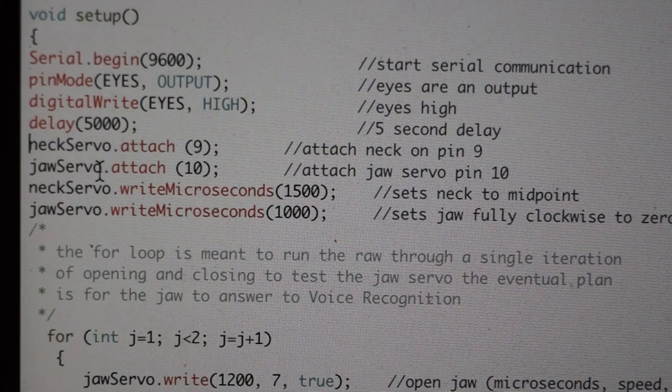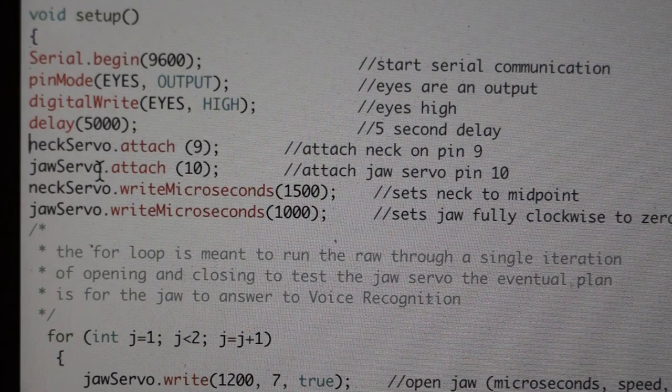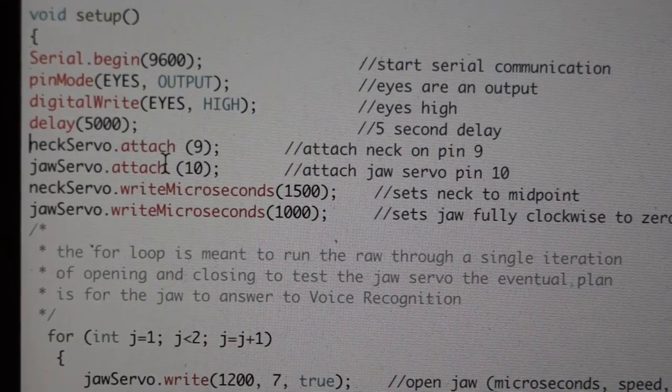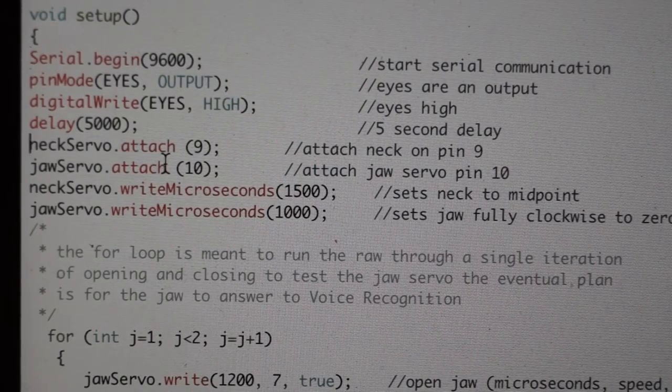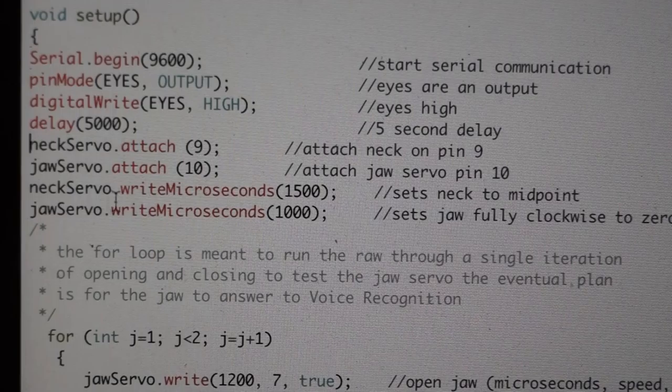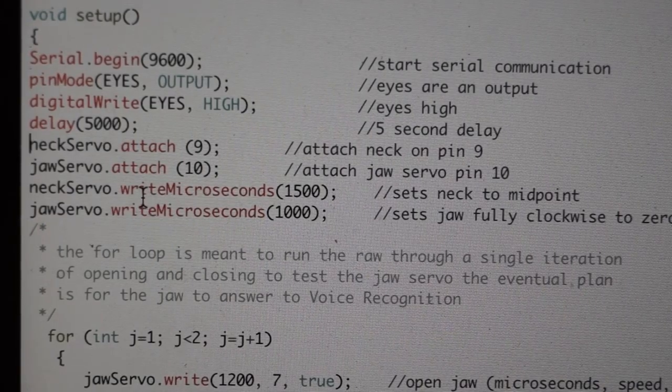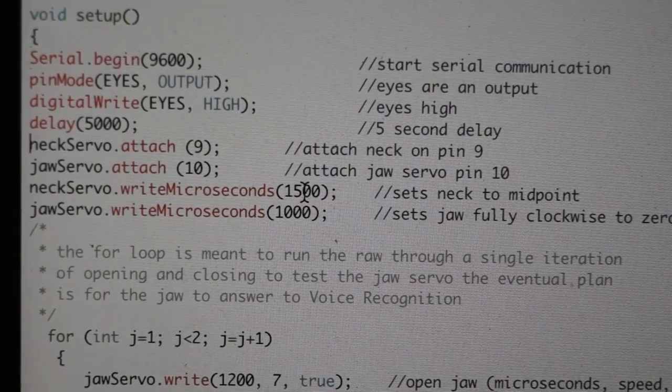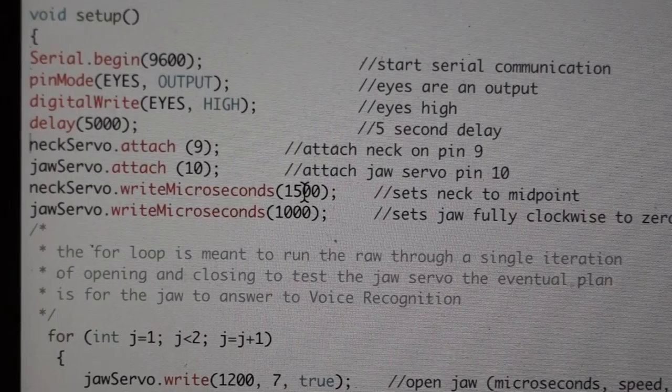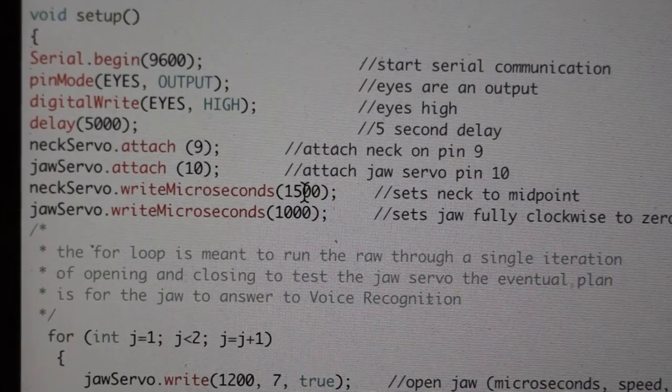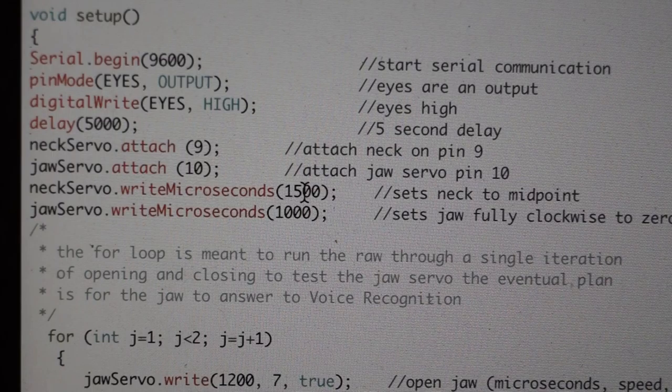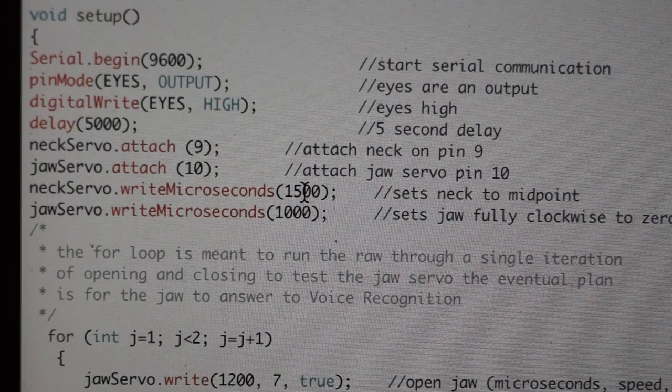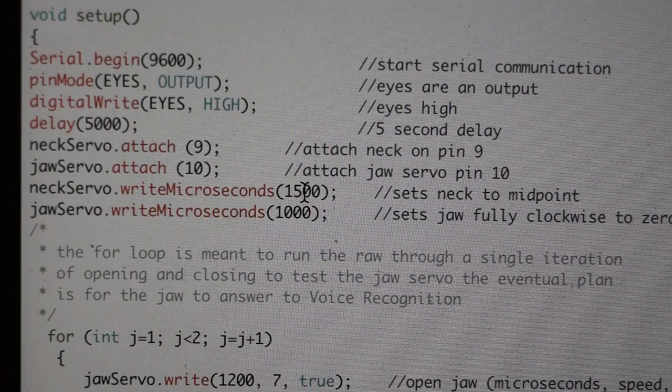So then what we're going to do is we attach the neck servo and attach the jaw servo. The next element of this, and this was one that took me a big hunk of time to figure out in tinkering and trying to get the code to work right. If you remember from some earlier videos I was having a problem where the jaw was just going to a full open position. Well what we've done here is rather than allowing the default settings of attach to drive that jaw servo or any of those other servos to a position beyond where we need to start them.